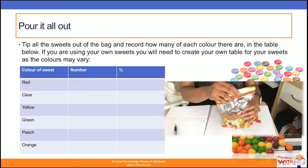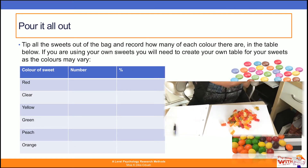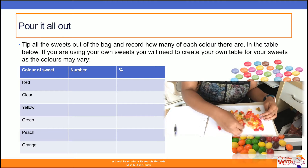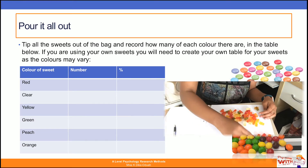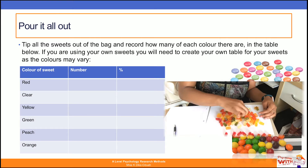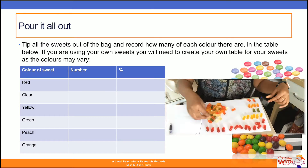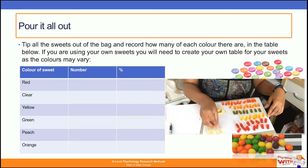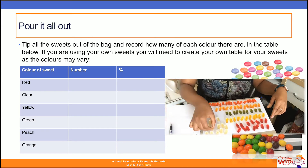Okay, so I want you to tip out all your sweets and once you tip them out I want you to group them by colour, because you're going to need to count how many of each sweet is of a particular colour. As you can see in the video, I've pulled out my gummy bears and I'm about to arrange them into their colour categories.